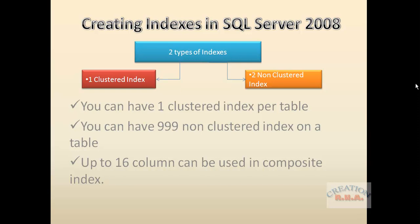There are two types of indexes in SQL Server: one is a clustered index and the other is a non-clustered index. In SQL Server you can have only one clustered index per table, and as the SQL Server online manual specifies, you can have up to 999 non-clustered indexes on a table in SQL Server 2008.